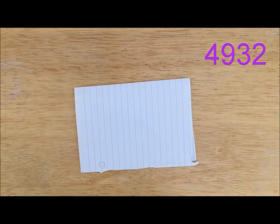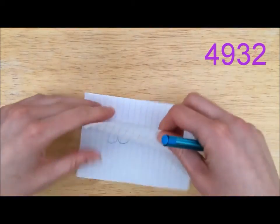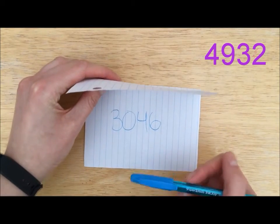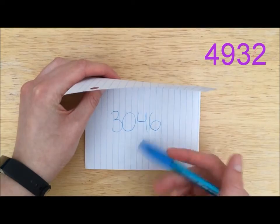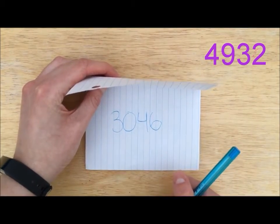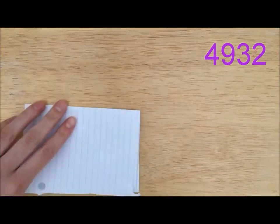As the number creator, I would compare the purple player's guess of 4,932 to the number that I wrote down, 3,046. I can see that she has two warm digits, the 4 and the 3, and two cold digits, the 9 and the 2.